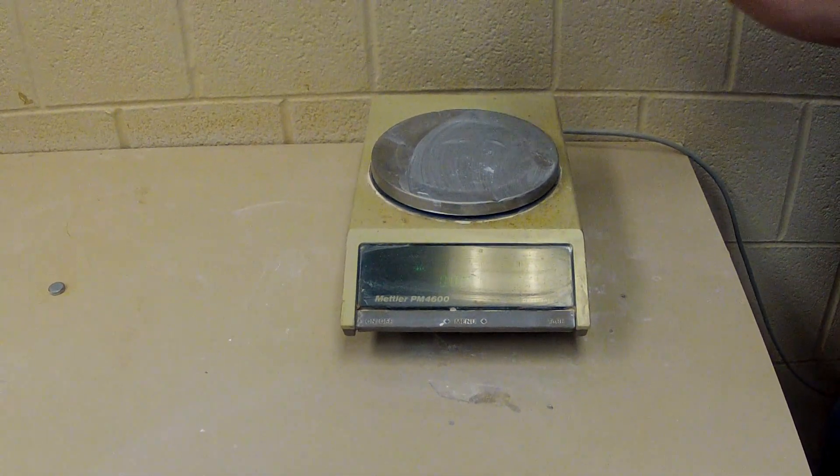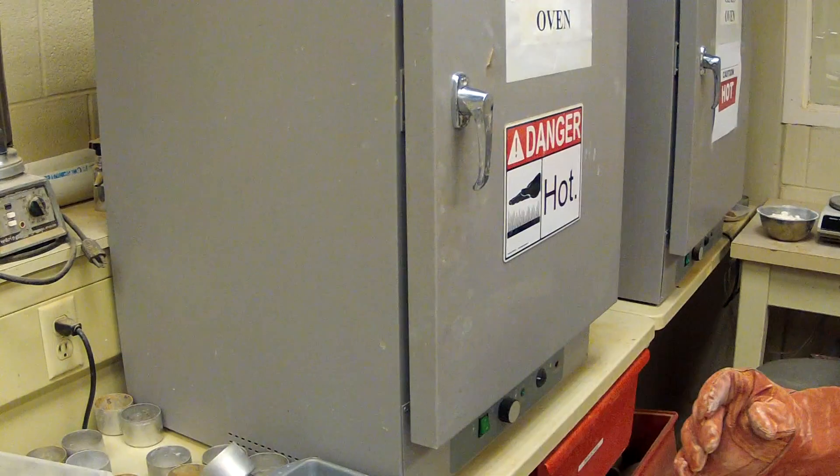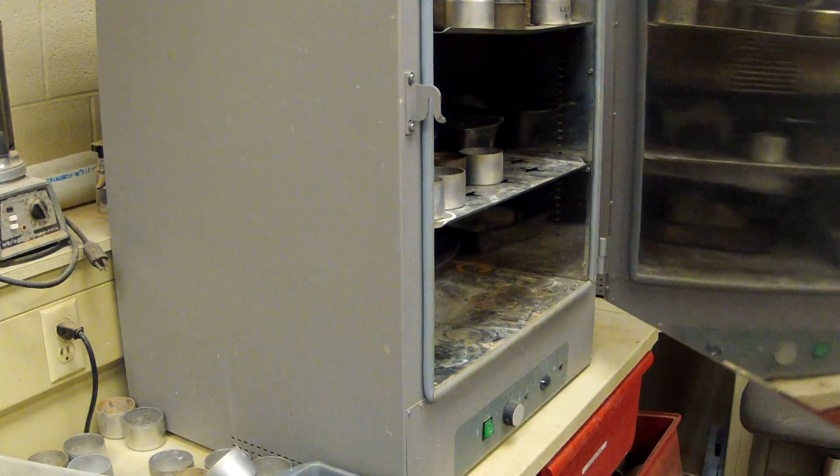When that is complete, measure and record the weight of the container with wet soil. Again, do not forget to zero the balance. Place a specimen in the oven for 12 to 24 hours.